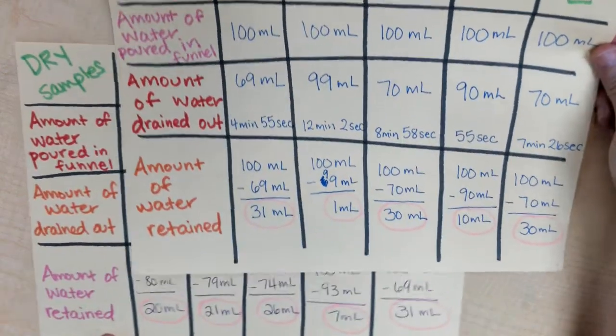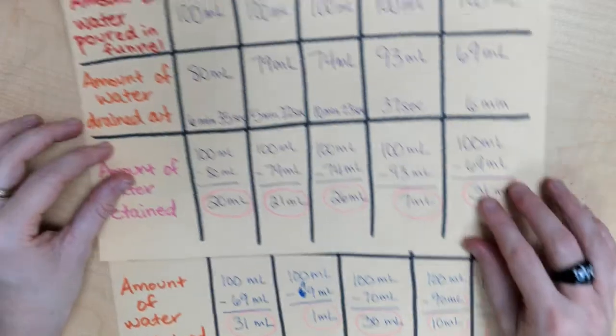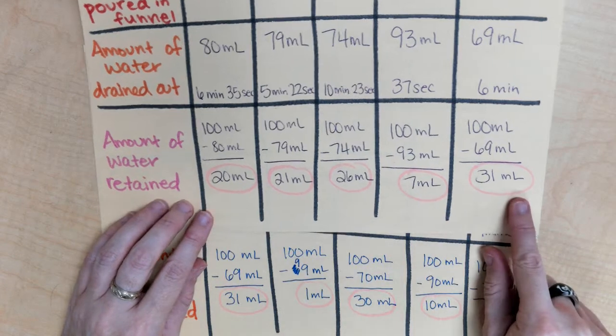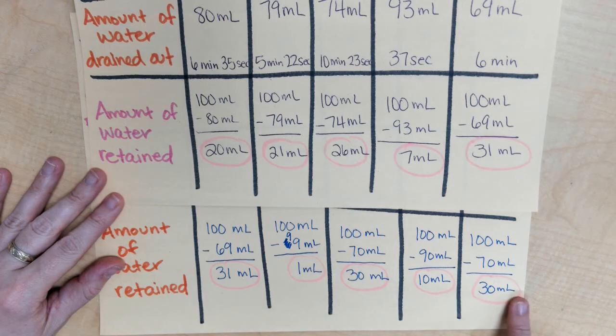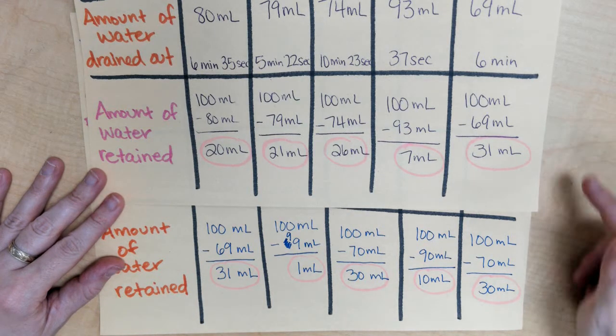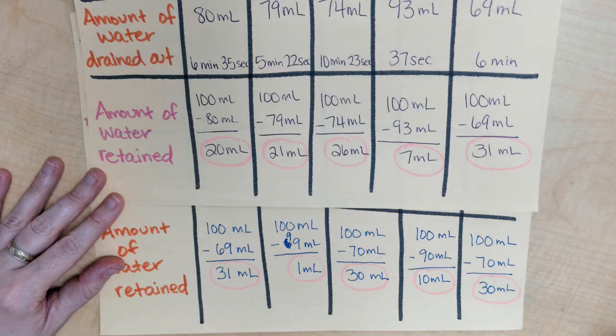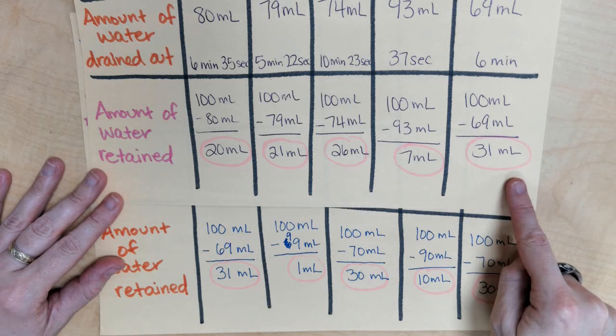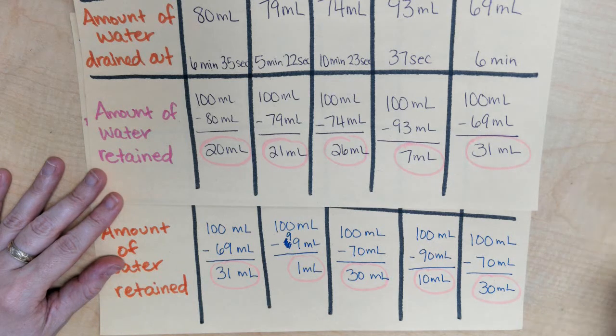So, side to side, these are all our dry samples, and then compared to all of our wet samples. What conclusions can you make by looking at these different data points? Did the soils retain more water or less water when the soils themselves were dry or when they were wet? What do you think?